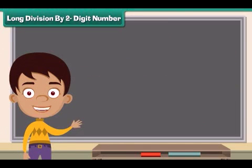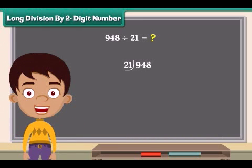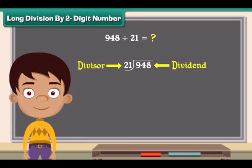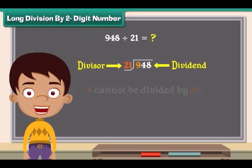Let us now learn to divide 948 by 2 digit number 21. The number 948 is the dividend and 21 is the divisor. 9 cannot be divided by 21, so look at the first 2 numbers from the left in the dividend.